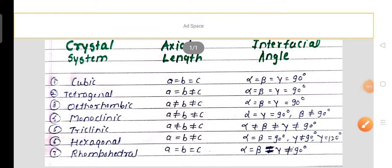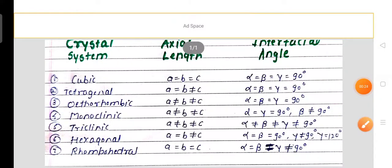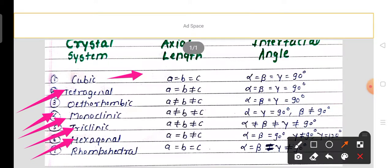In this lecture we are going to discuss the seven crystal systems. This topic is very important from a competitive chemistry exam point of view. The seven crystal systems consist of: cubic, tetragonal, orthorhombic, monoclinic, triclinic, hexagonal, and rhombohedral systems.